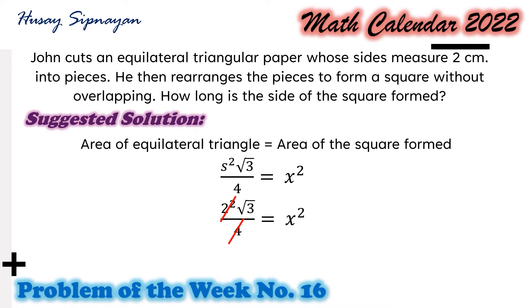Getting the square root of both sides of this resulting equation, we will get x equals fourth root of 3 centimeters. And this is the length of each side of the square formed. In decimal, this is 1.316 centimeters.